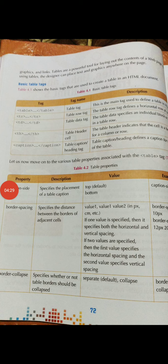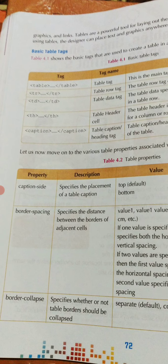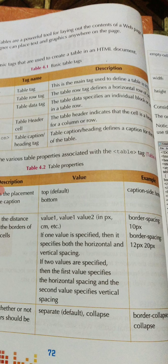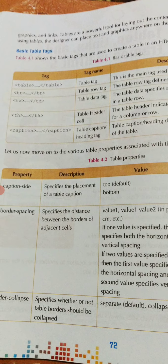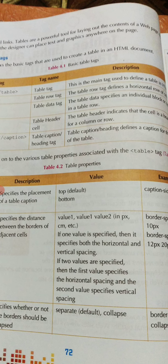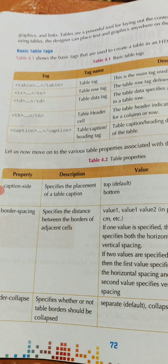Then students, you will find the basic table tags. Look at table 4.1, where you will find five table tags. The first one is the opening and closing table tag. This is the main tag used to define a table in HTML — it is useful for making and defining a table in your HTML document.